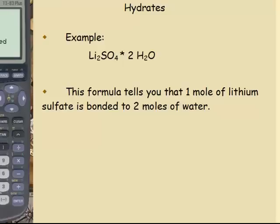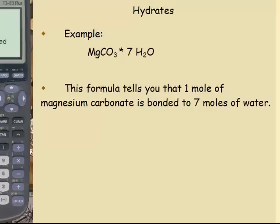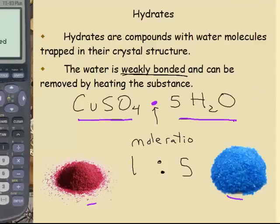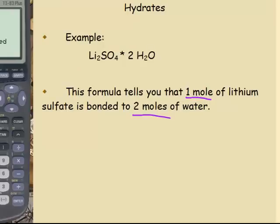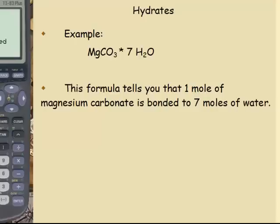Another example. Li2SO4·2H2O, lithium sulfate dot 2H2O. That means you have 2 moles of water for every 1 mole of lithium sulfate, a 1 to 2 mole ratio. A 1 to 7 mole ratio, magnesium carbonate dot 7H2O. The way you name these things is you name this first part, copper 2 sulfate or cupric sulfate, and then you say cupric sulfate pentahydrate to show the 5.